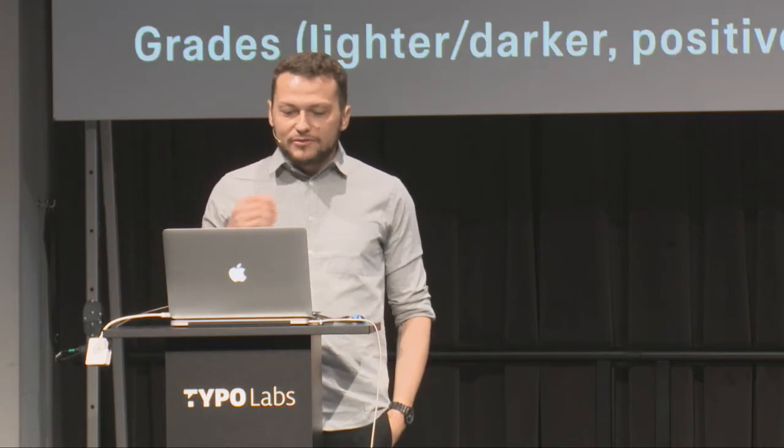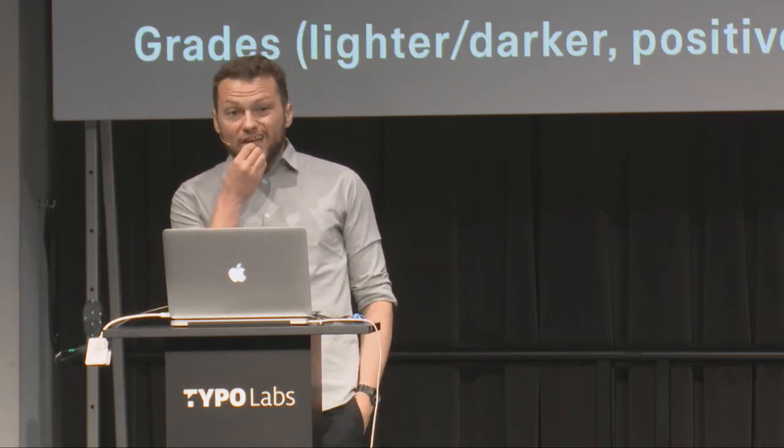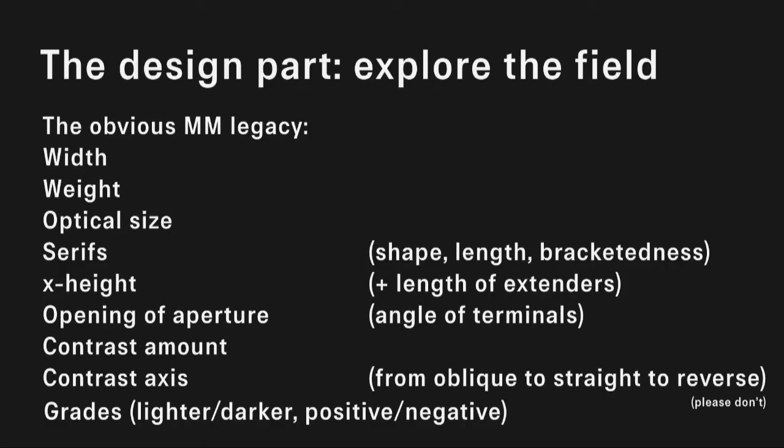I'm also waiting for the 30-character limit in font naming to be lifted, because I'd really like to have my own Jenson Revival Extra Bold Condensed Caption Italic in my font menu. So 20 stylistic sets — awesome. I have ideas for 64,000 axes, so I prepared a list. Maybe the most obvious things we can design in variable fonts are legacy multiple-master things already laid down: width, weight, optical size.